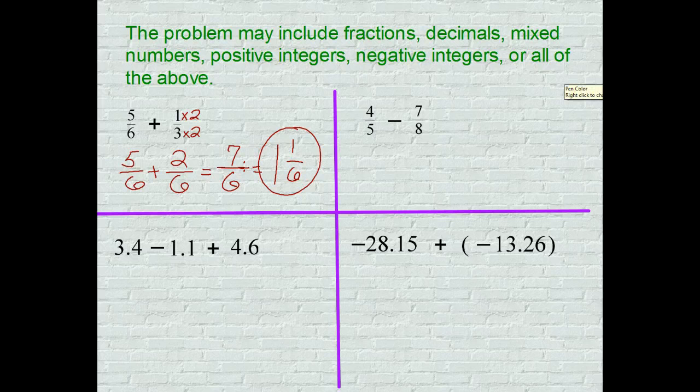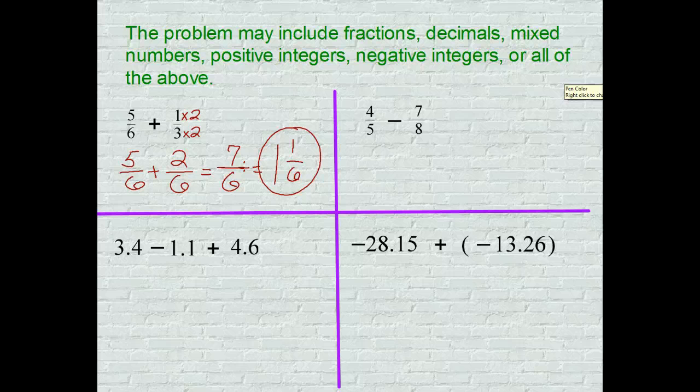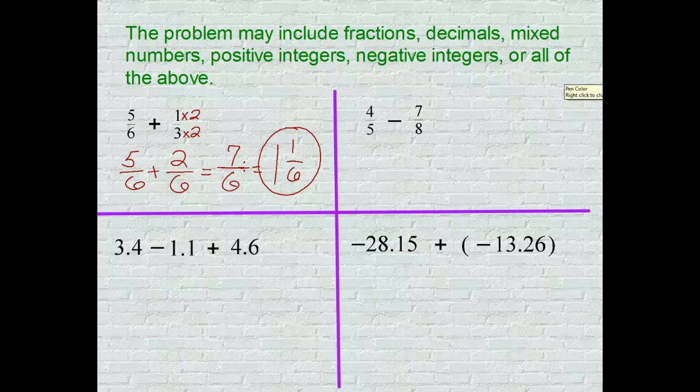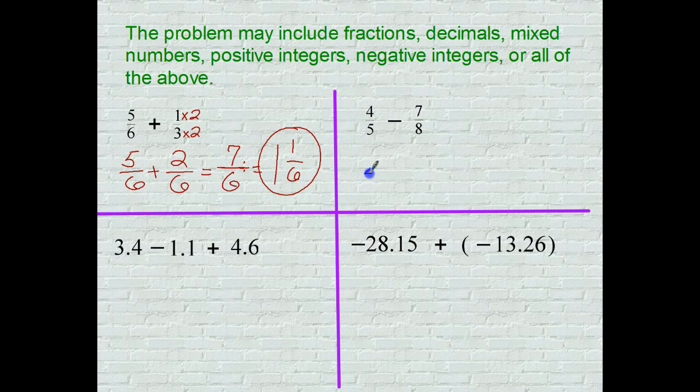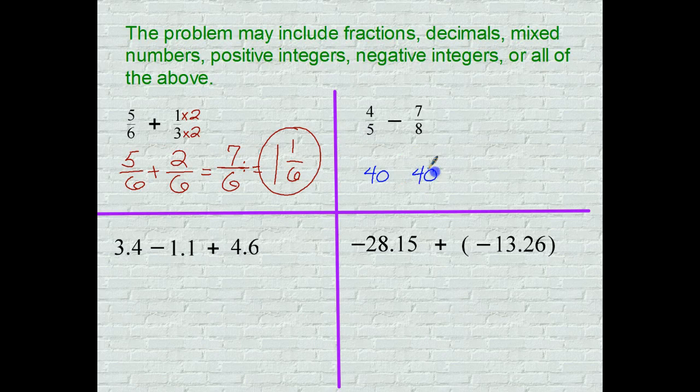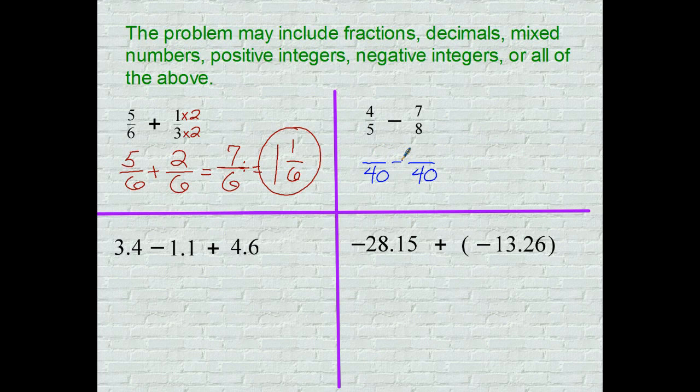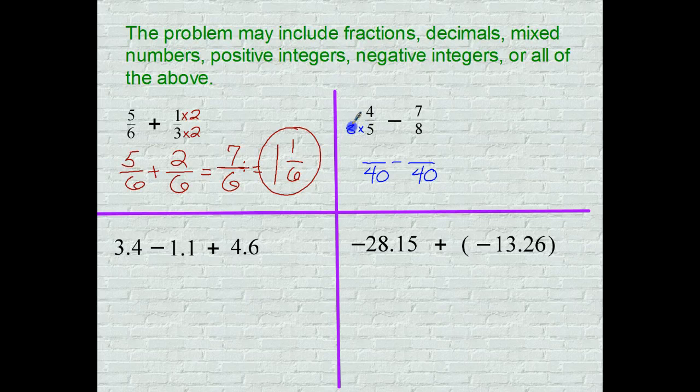Problem two: denominators of five and eight, and we're subtracting. So we need a common denominator. What number do both of these denominators go into evenly? And the smallest one would have to be forty. I hope you know your multiplication facts; that's how I did it. And we're subtracting them. So what did you do to get from five to forty? Well, you multiplied by eight, so you multiply the top by eight and you get thirty-two.